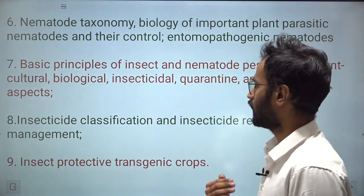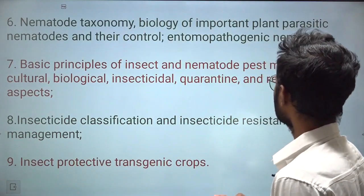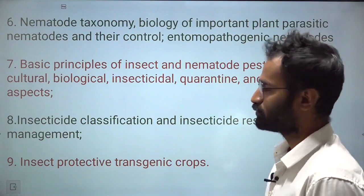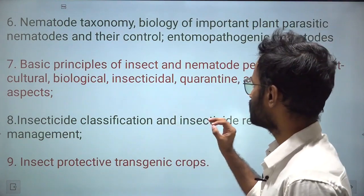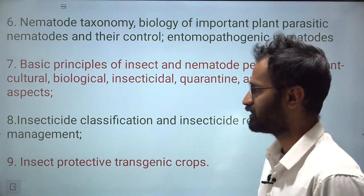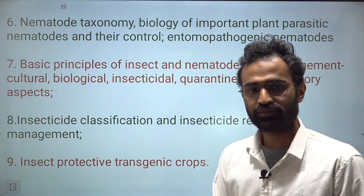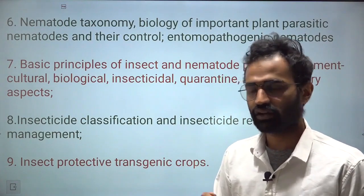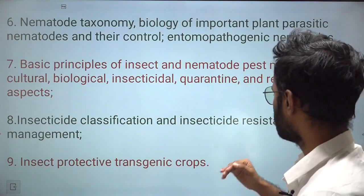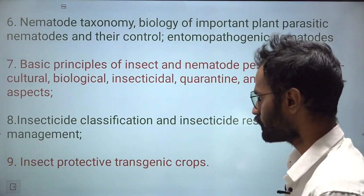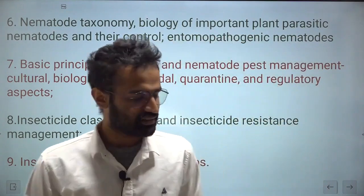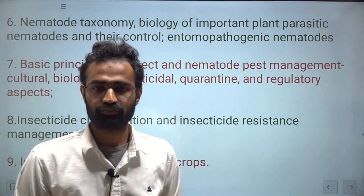We also cover useful and beneficial insects such as honey bees, lac insects, silkworms, and pollinators. From nematology, topics include nematotaxonomy, biology of important plant parasitic nematodes, their control, and entomopathogenic nematodes. From management, you need knowledge of basic principles of insect and nematode pest management — cultural, biological, insecticidal, quarantine, and regulatory aspects, i.e., IPM. From toxicology, topics include insecticide classification, mode of action, insecticide resistance management, and insect-protective transgenic crops like Bt.